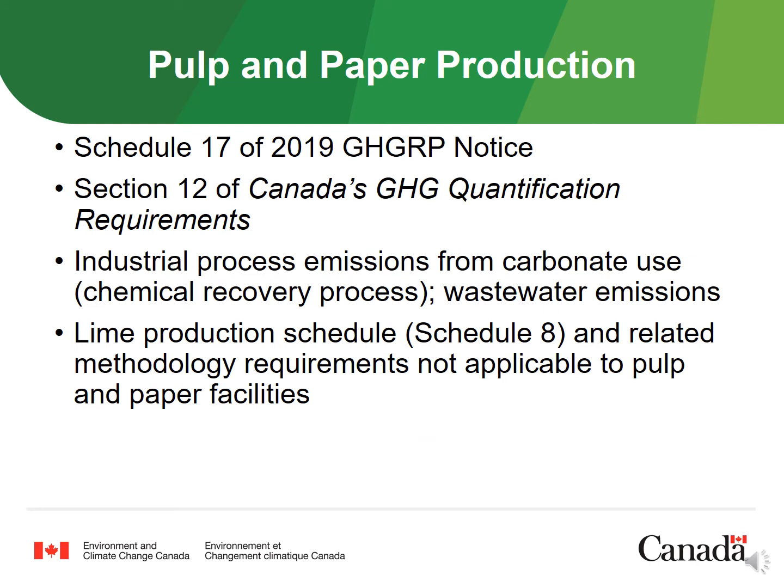The greenhouse gas requirements for this sector are found in Schedule 17 of the 2019 GHGRP notice, and prescribed quantification methods are found in Section 12 of Canada's greenhouse gas quantification requirements document. Industrial process emissions from carbonate use in the chemical recovery process are to be reported, as well as any wastewater emissions. Note that lime production reporting under Schedule 8 of the 2019 notice is not applicable to pulp and paper facilities — industrial process emissions from lime kilns at pulp and paper facilities are covered under Schedule 17.